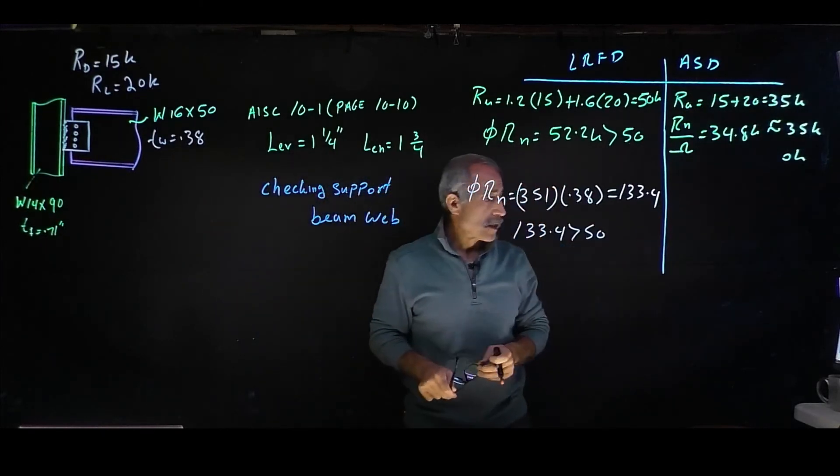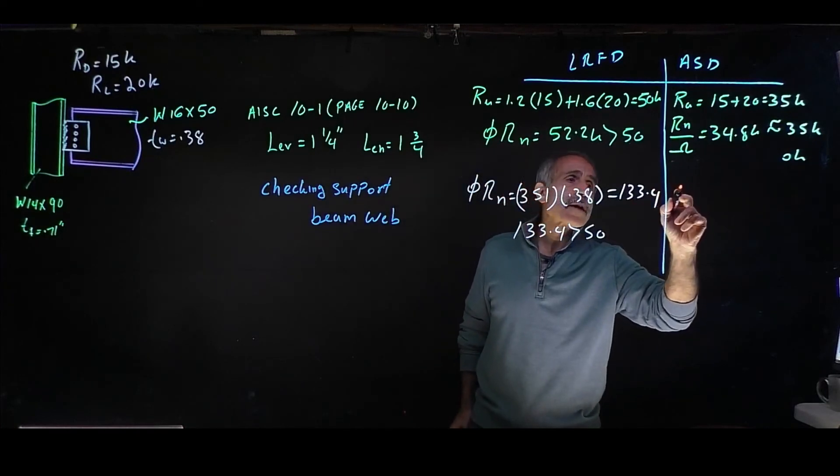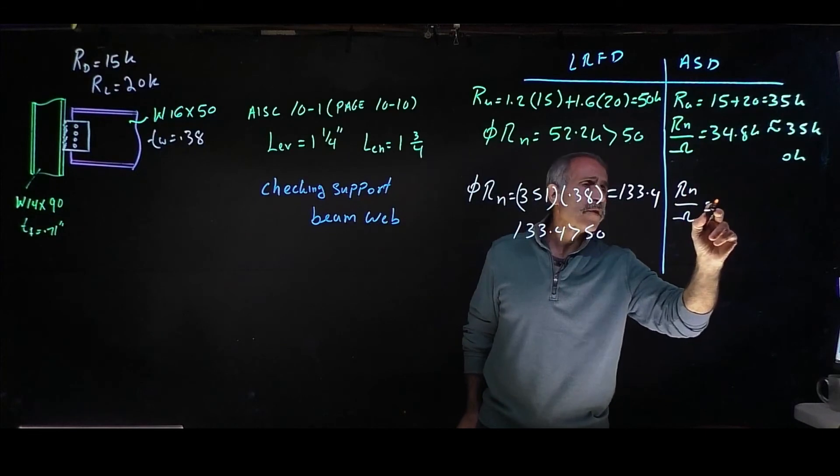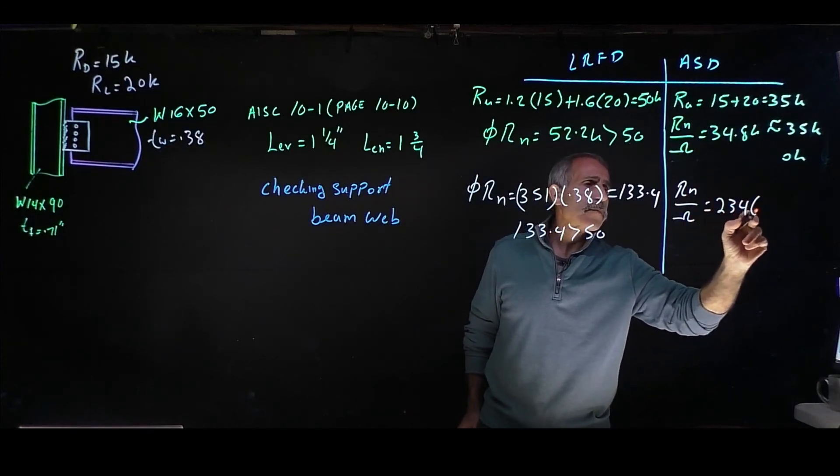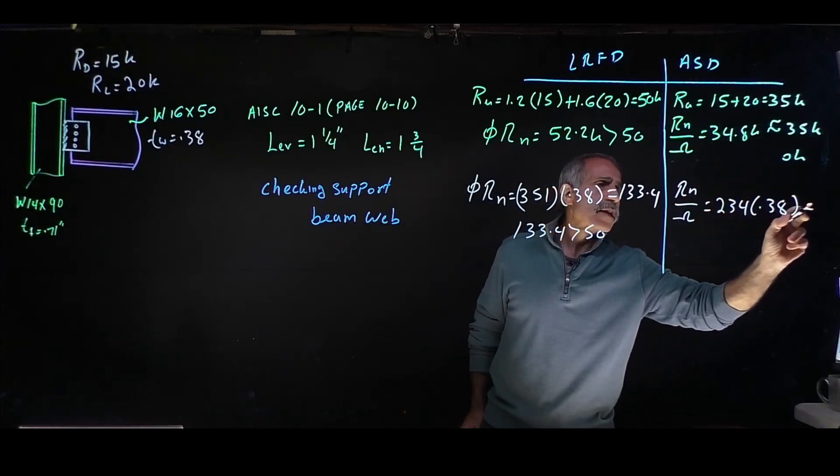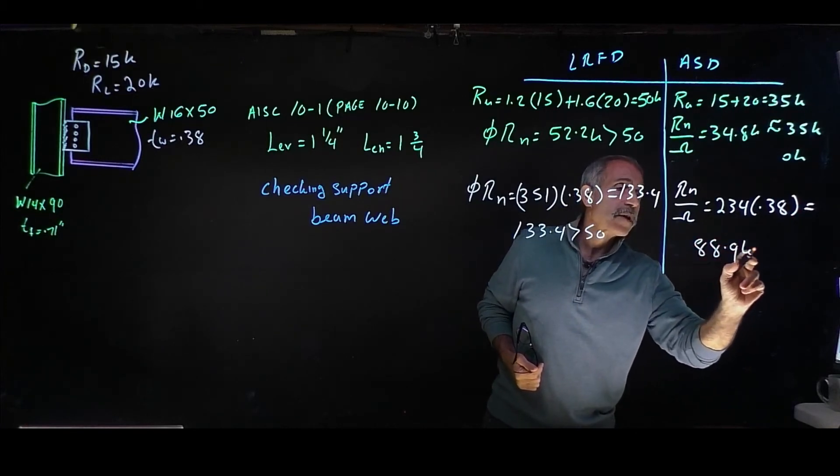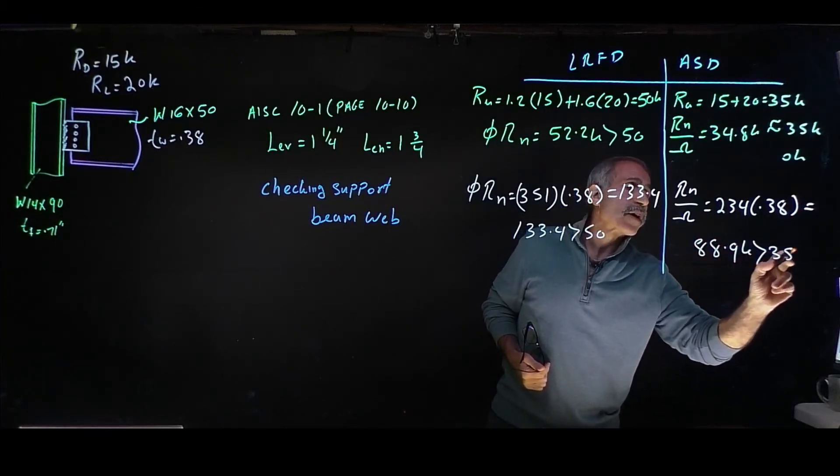And again, for ASD, Rn divided by omega comes out to 234 times 0.38 and came out to 88.9 kips, which is bigger than 35 kips.